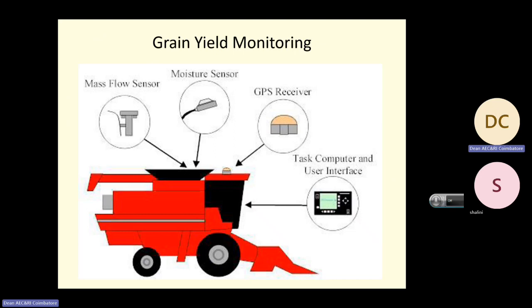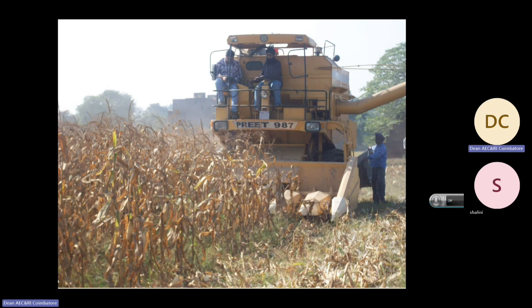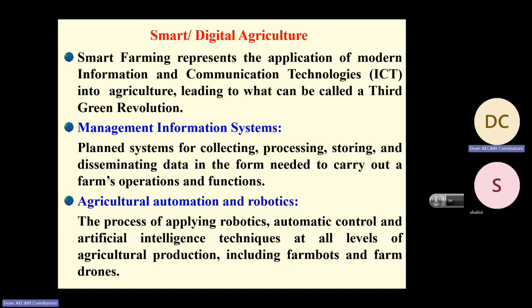Smart and digital agriculture is everywhere now. Smart farming represents the application of modern information and communication technologies in agriculture, leading to what is called the third green revolution. This third green revolution requires ICT management information systems for collecting, processing, storing, and disseminating data. Agricultural automation and robotics is also an important field for agriculture engineering students — applying robotics, automatic controls, and artificial intelligence techniques at all levels of agriculture production, including farm robots and farm drones.